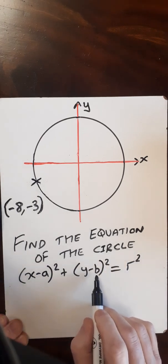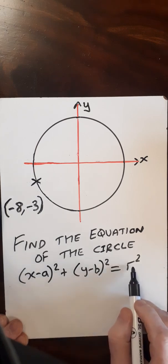a and b form the centre of the circle, the coordinates of that, and r represents the radius of the circle.